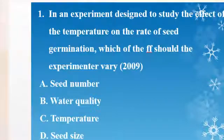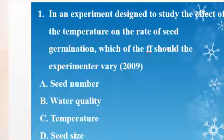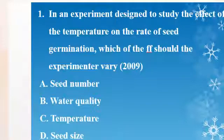The number of these are the zero control group. Temperature is in this case the independent variable, and the rate of seed germination is the dependent variable.